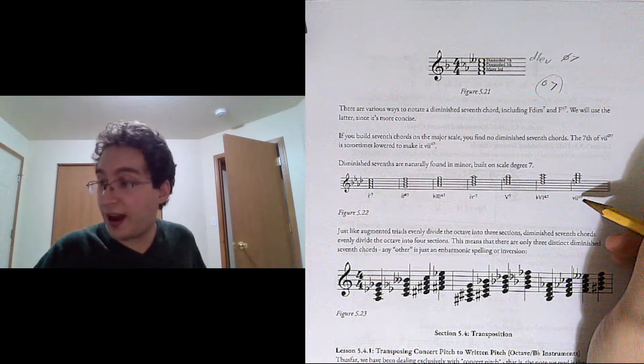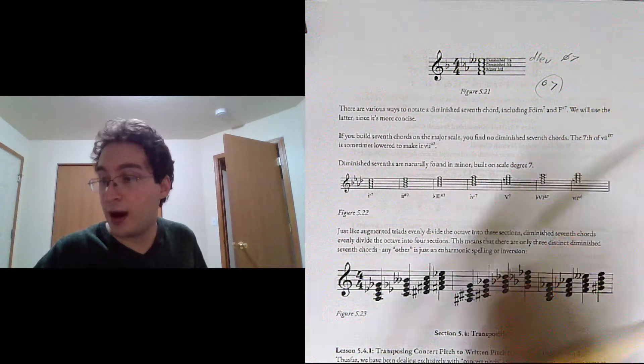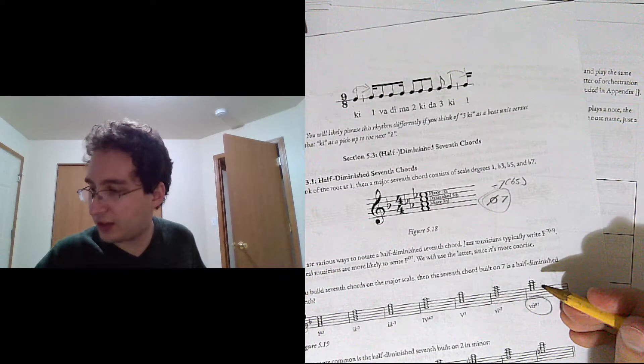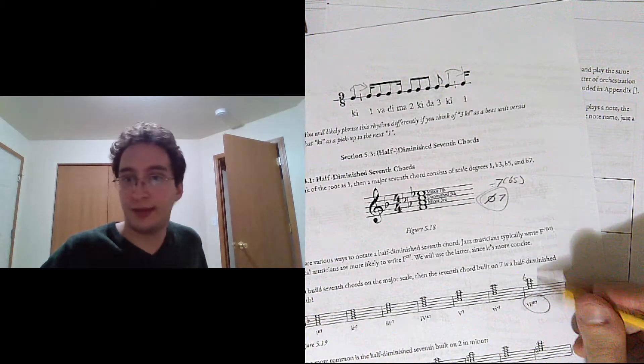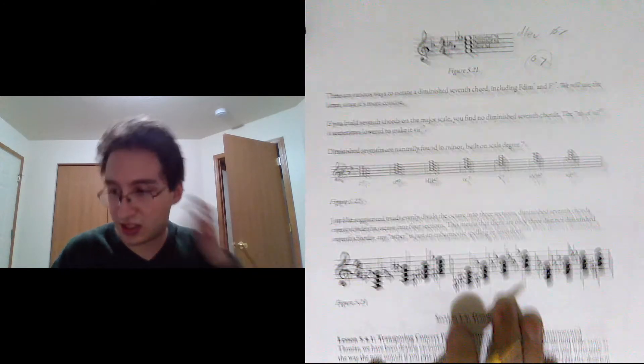You'll also find in major fully diminished 7ths by taking your half diminished 7 and then just adding a flat. So sometimes people will turn that half diminished 7th into a fully diminished 7th.